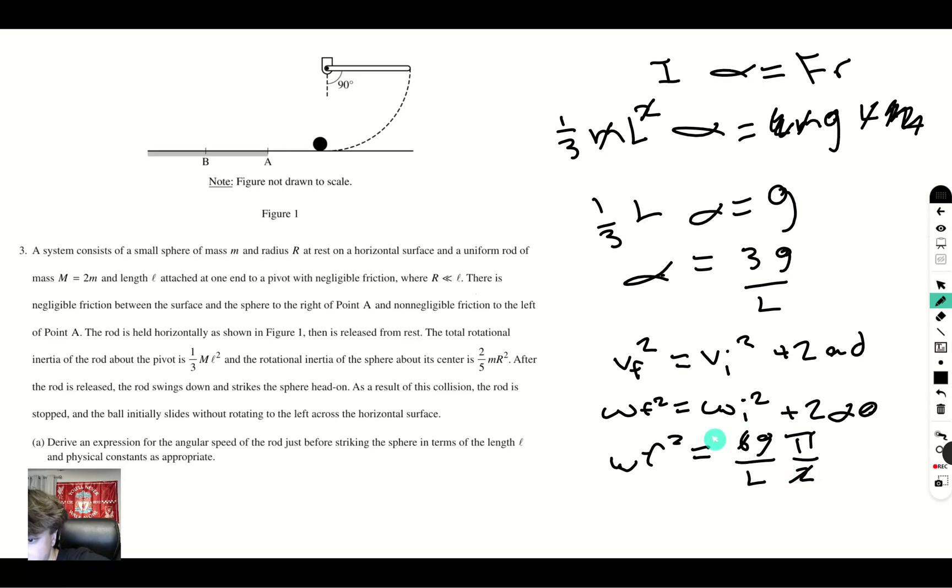This 2 and this 6 cancel out, so we get 3. So we find that omega final squared is going to be 3g pi over l, meaning that our omega final is square root of 3g pi over l. So as this completes its 90 degree turn, this rotational speed that it hits the ball with is the square root of 3g pi over l. Let's move on to the next page.